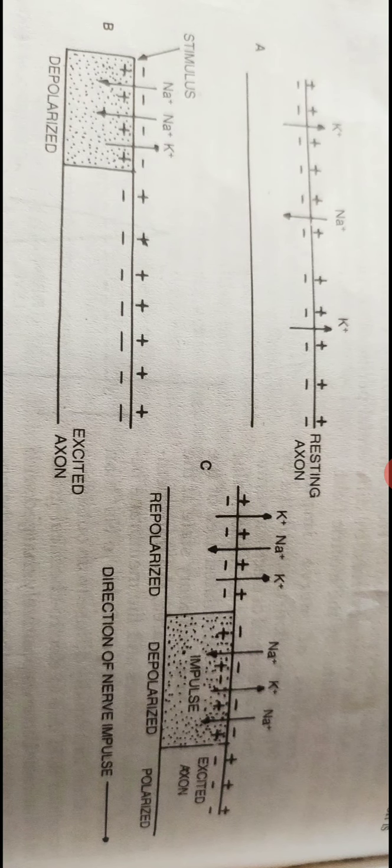After the peak of action potential called spike potential, the permeability of the membrane to sodium ions decreases while it becomes more permeable to potassium ions, which rapidly diffuse out from the cytoplasm to extracellular fluid due to electrochemical gradient.